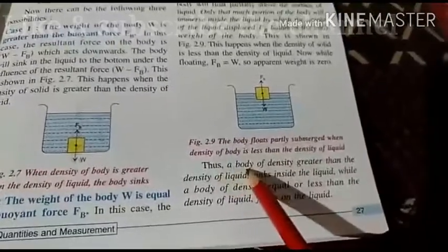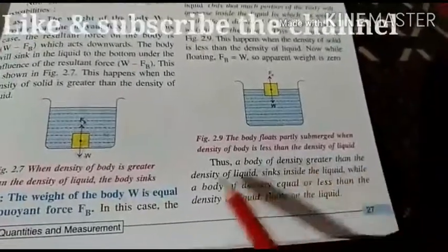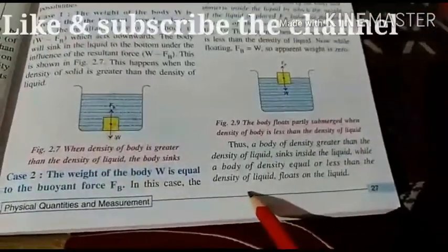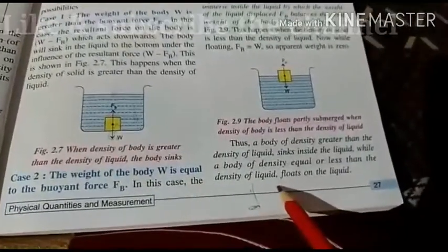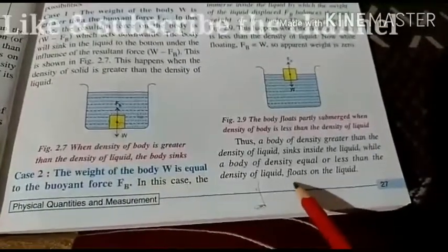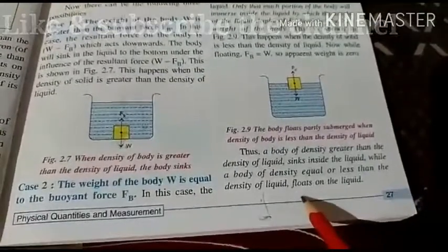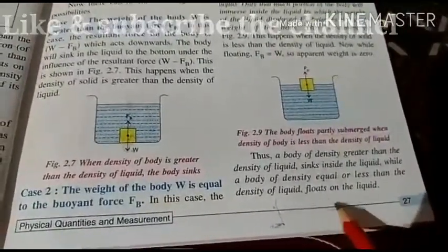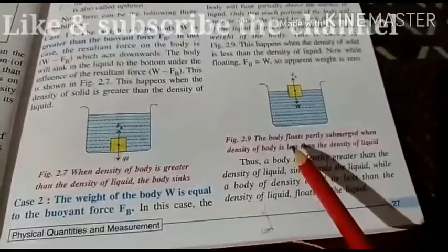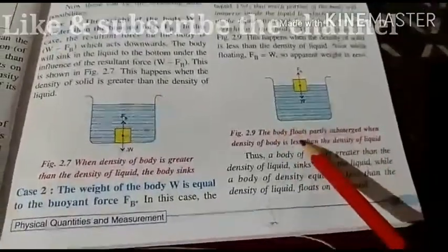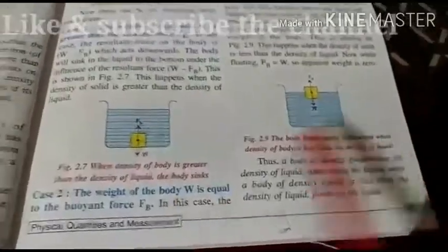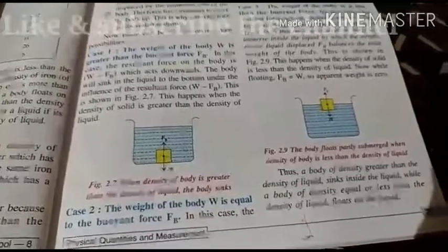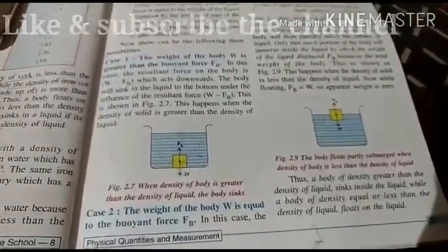In summary: if the density of the body is greater than the density of the liquid, the body sinks. If the densities are equal, the body floats just at the surface. If the density of the solid is less than the density of the liquid, the body floats partially submerged. These three cases are all related to density.